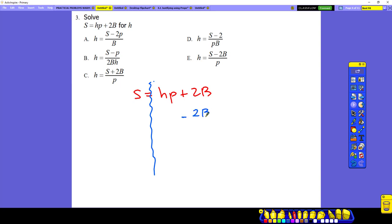Okay, subtract. It's done. Then I'll have s minus 2b equals this. And then we're trying to solve for h. What's the operation between h and p? That's multiplication. To undo or to remove the p, we have to use the opposite, the inverse operation, which is division.